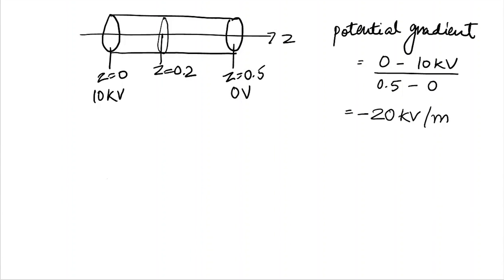The potential gradient is minus 20 kilovolts per meter. So per 0.1 meter there is a 2 kilovolt difference. Starting from 10 kilovolts at Z equal to 0, there is a decrement of 2 kilovolts per 0.1 meter. Therefore at Z equal to 0.2, the potential will be 6 kilovolts.